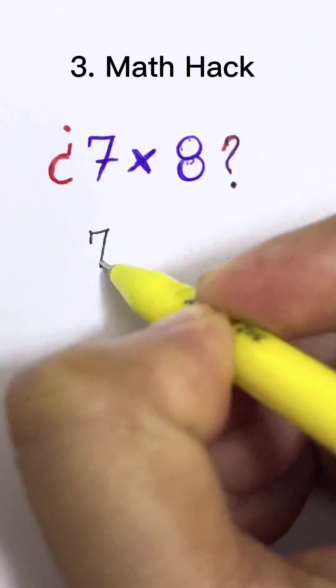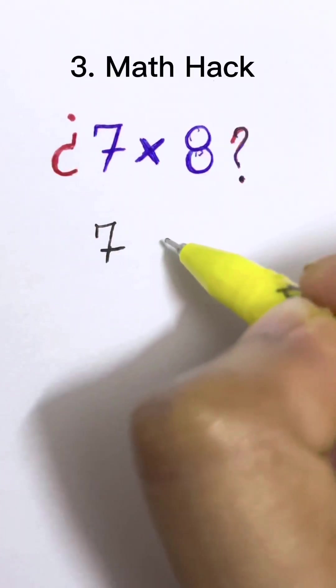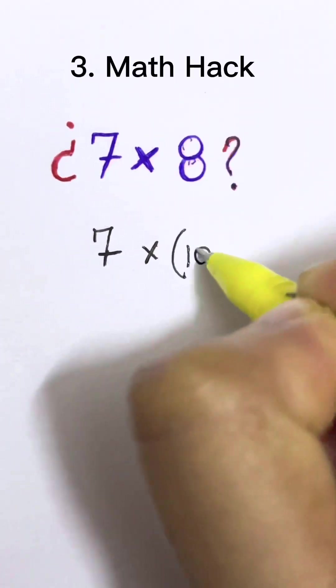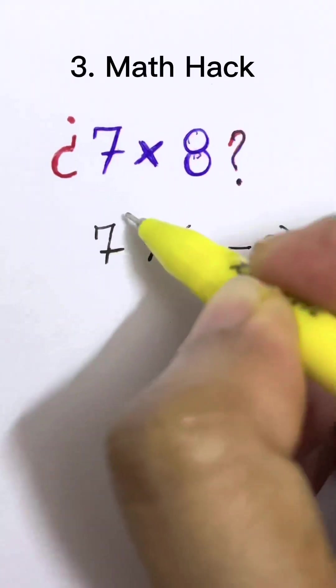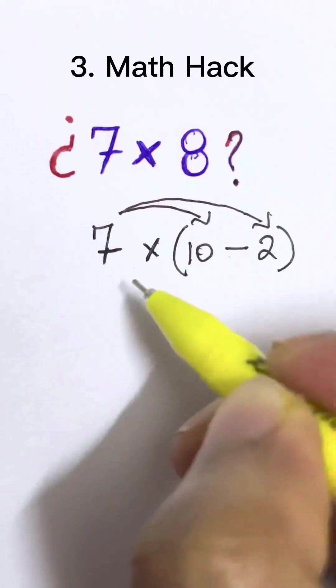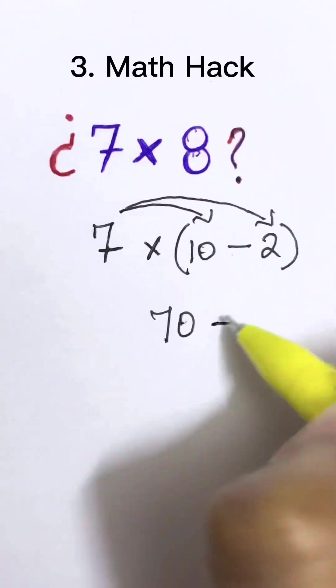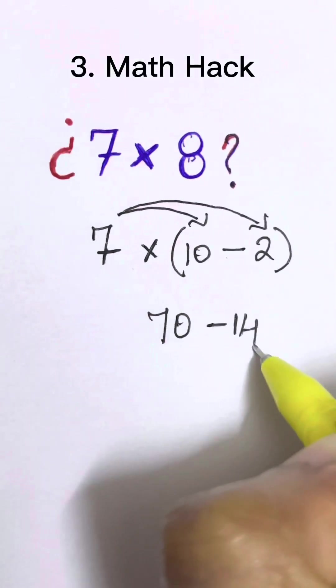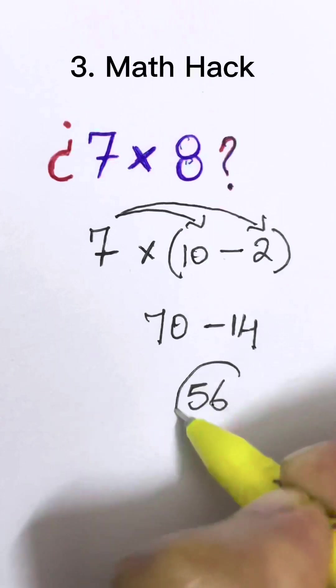7 multiplied by 8 can be written as 10 minus 2. You can multiply 7 with 10 and with 2. So 7 times 10 is 70 minus 7 times 2 is 14. 70 minus 14 is 56. That's your answer.